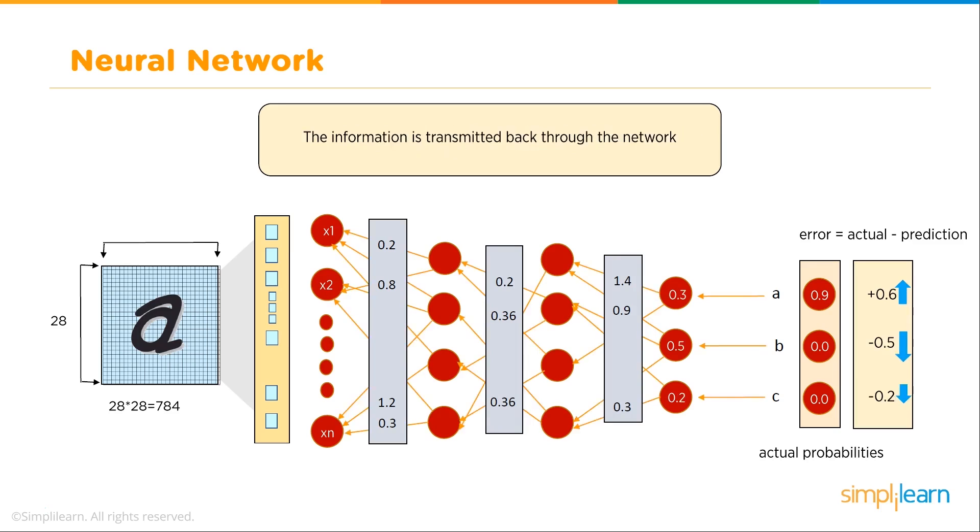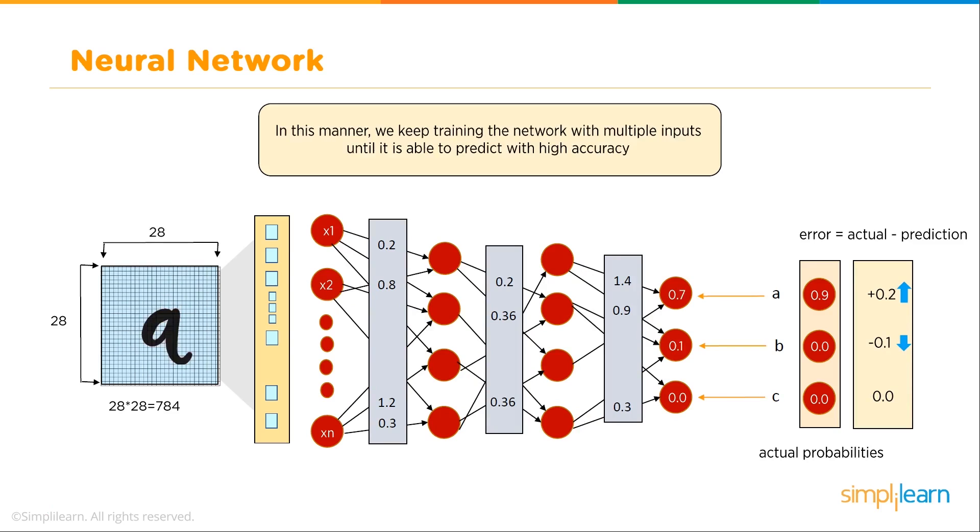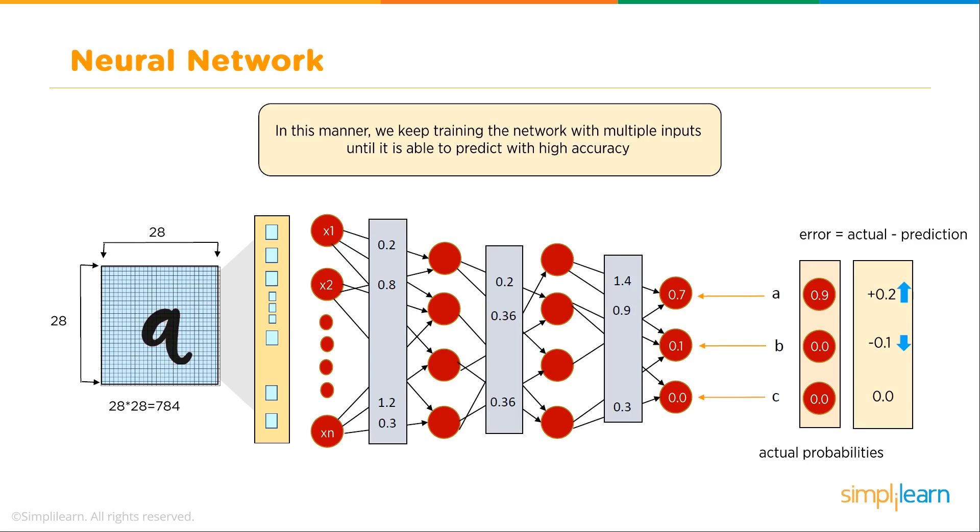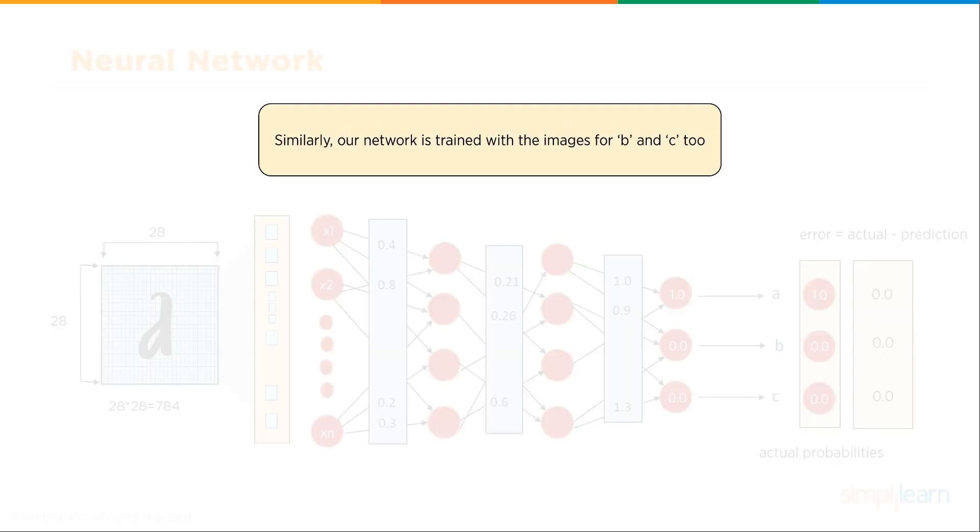Weights throughout the network are adjusted in order to reduce the loss in prediction. Here comes our error: 0.6, minus 0.5, minus 0.2. That comes up and adjusts our 1.4, 0.9, all our multipliers. In this manner, we keep training the network with multiple inputs until it is able to predict with a high accuracy. We have a different A, quickly switches from cursive A to maybe a more elongated A. Similarly, our network is trained with the images for B and C too.